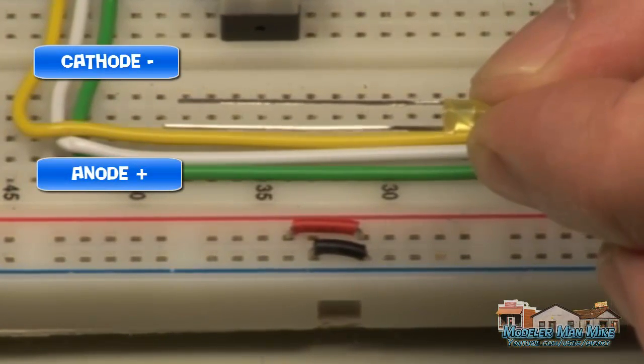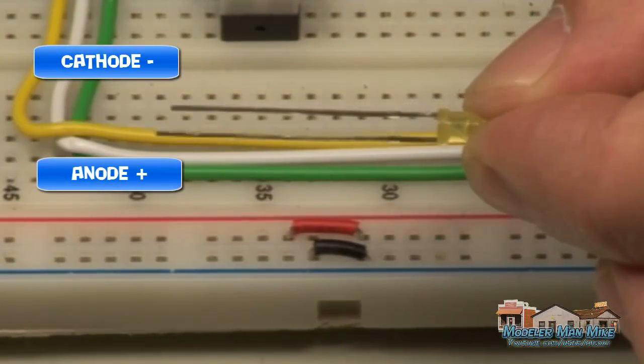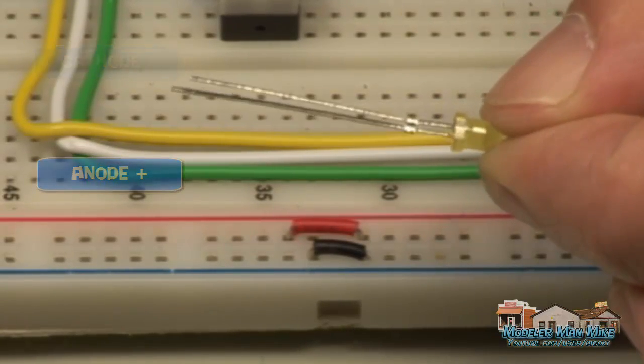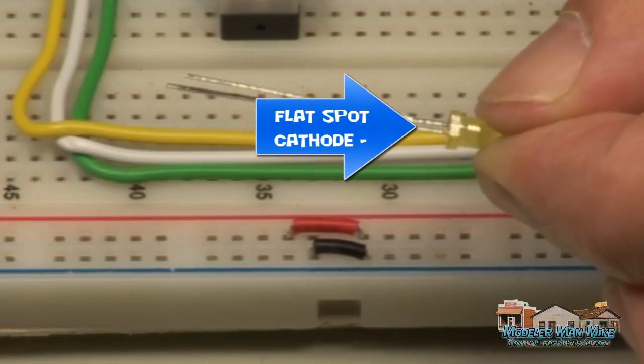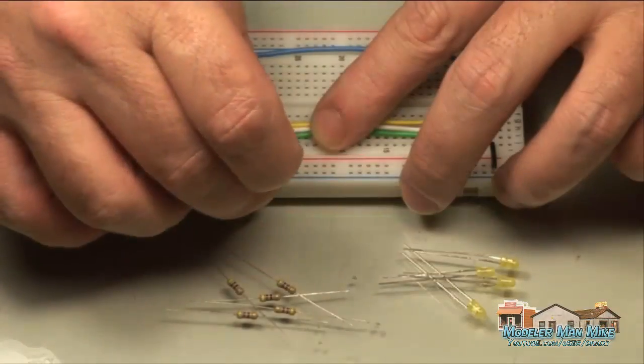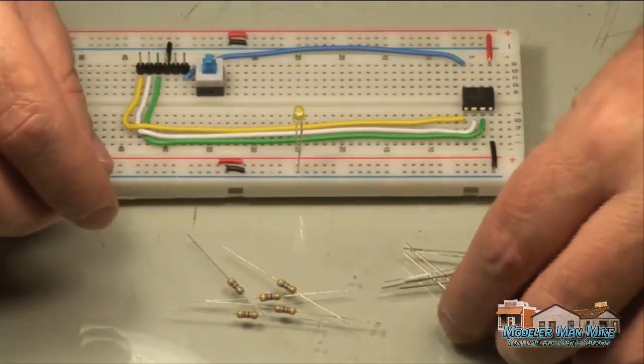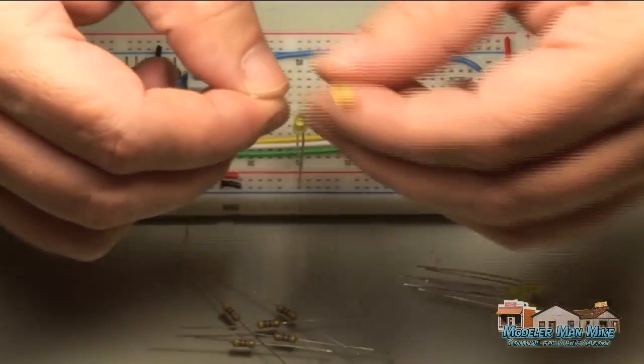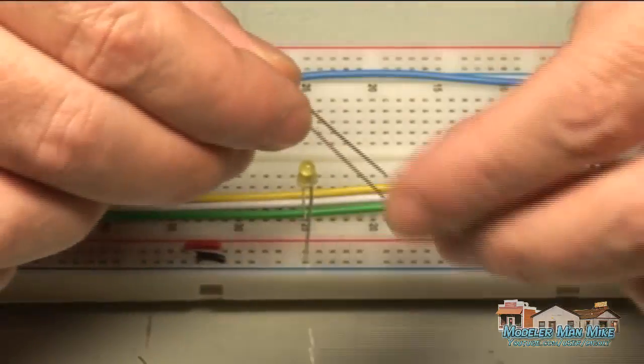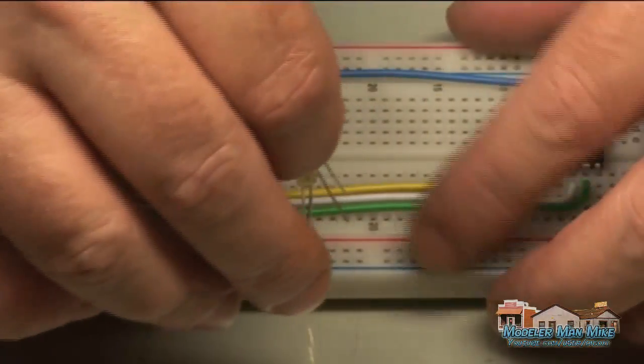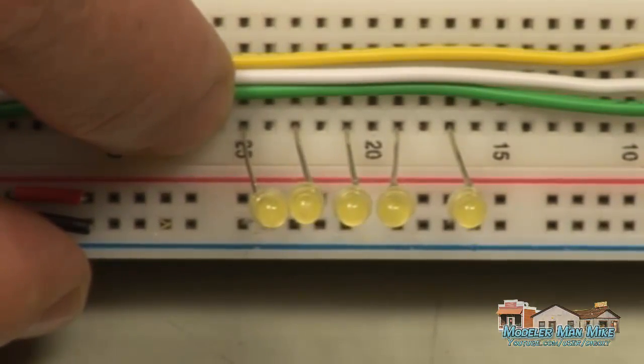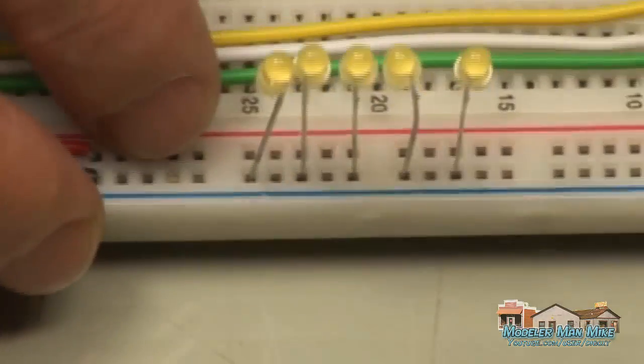On the LEDs there is a longer leg and a shorter leg. The long leg is an anode and the short leg is a cathode. Cathode is the negative. The cathode is also indicated by this flat spot on the LED. So what I am doing here is I am placing these LEDs in here. I am skipping a row between each. I am placing the short leg into the negative and the long leg into the breadboard, up here in the component area.